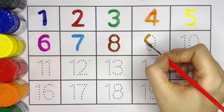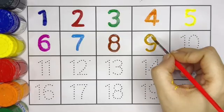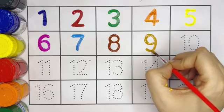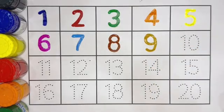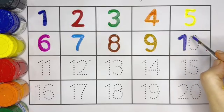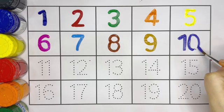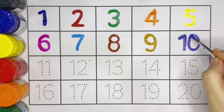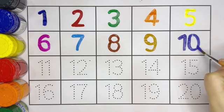Number 9 with golden color. 9, this is 9. Next number is 10. Number 10, 1, 0, 10. Number 10, violet color.